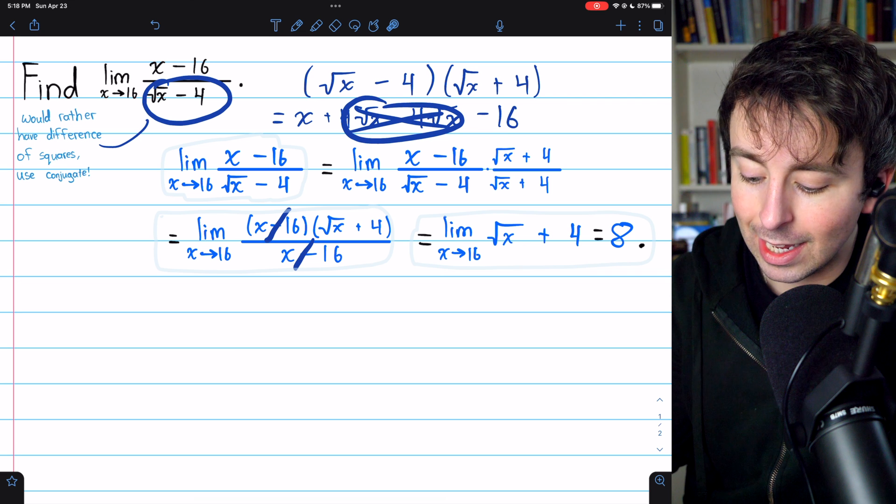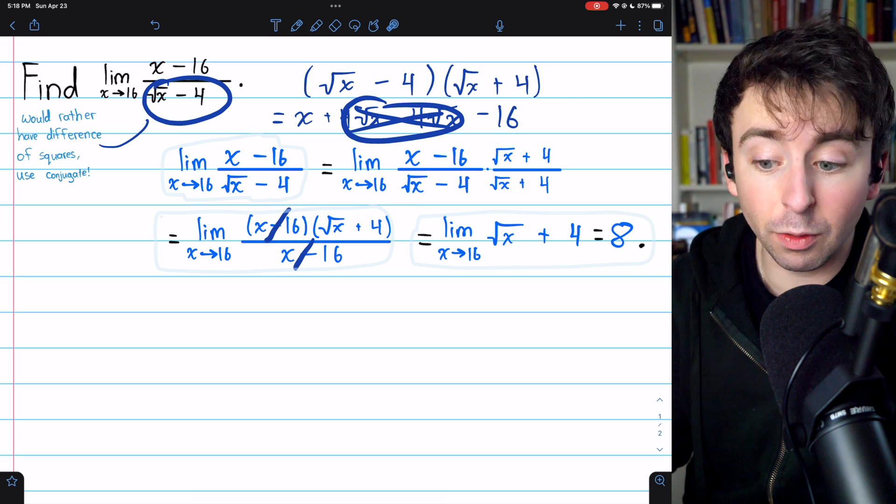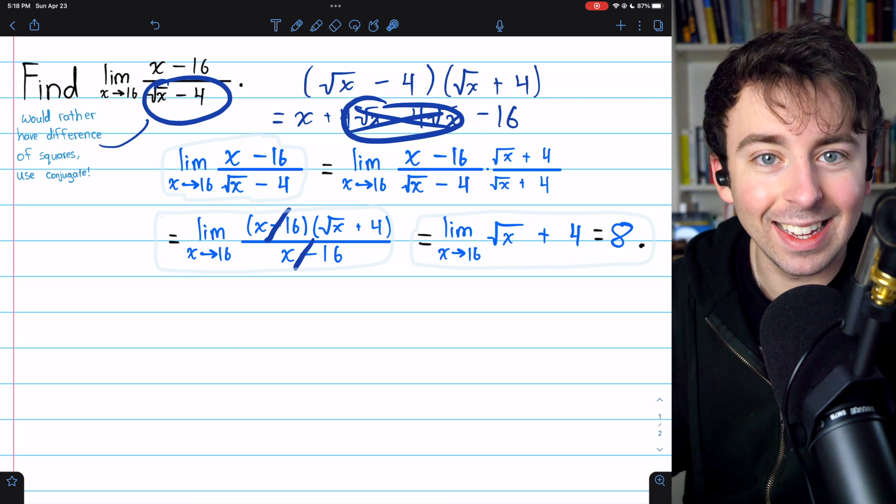Now we can plug it in. It gives us the square root of 16 plus 4. That's 4 plus 4. And so the limit is 8.